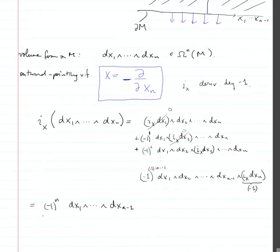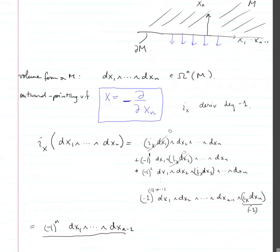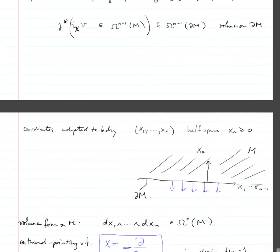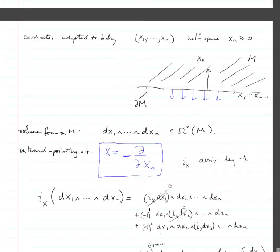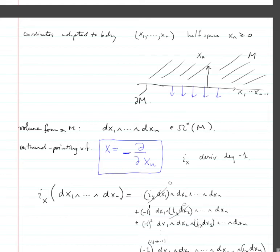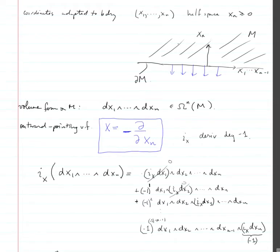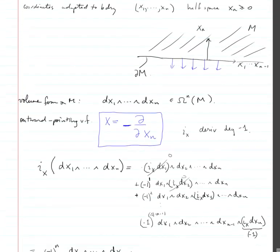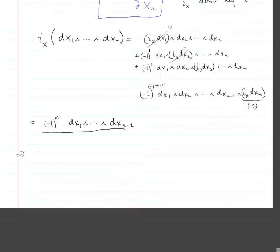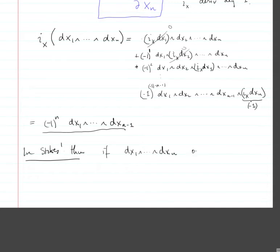The important thing is that if you were integrating an n-form on this manifold with boundary and trying to do Stokes' theorem, then the orientation you would use — in Stokes' theorem, if dx1 ∧ ... ∧ dxn is the orientation — and we are using boundary coordinates...